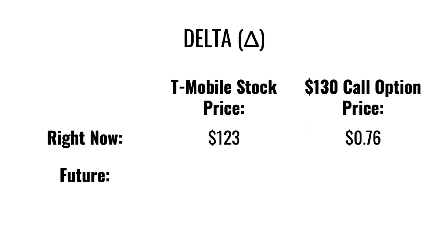There are five different Greeks we're going to talk about. The first one we're going to discuss is delta. In the Greek language, delta is symbolized by a triangle. Delta tells you that for every one dollar increase in a stock's price, the delta value will tell you how much the price of an option will change.